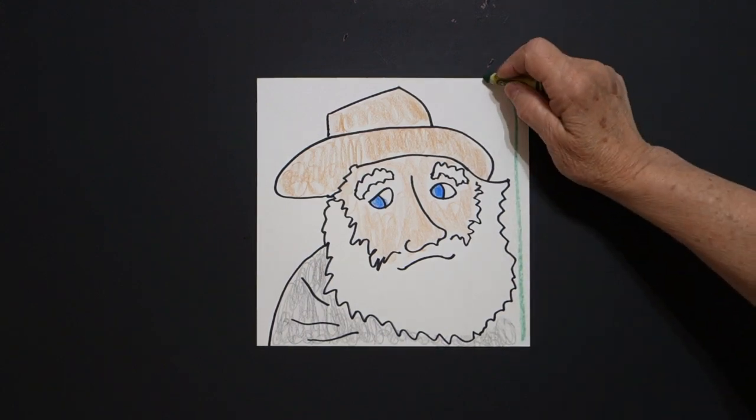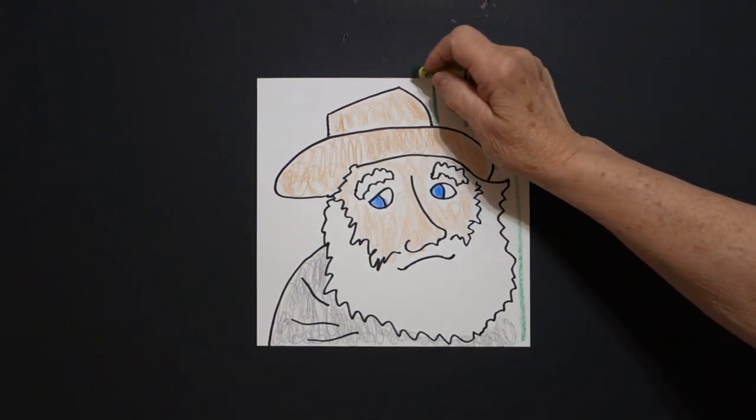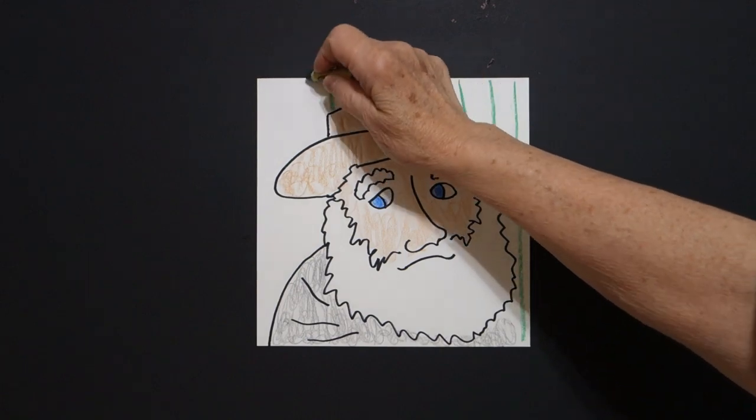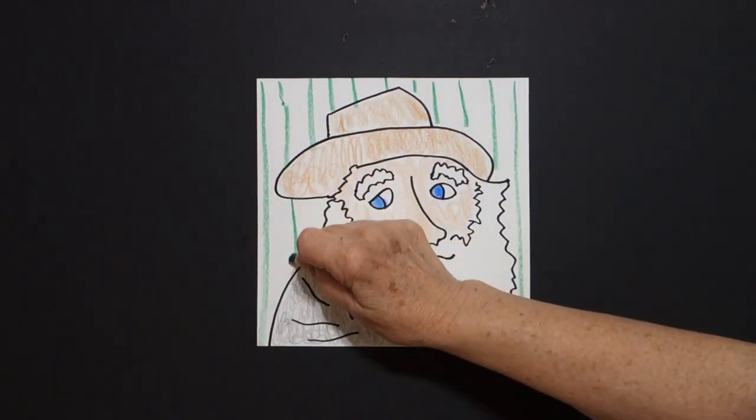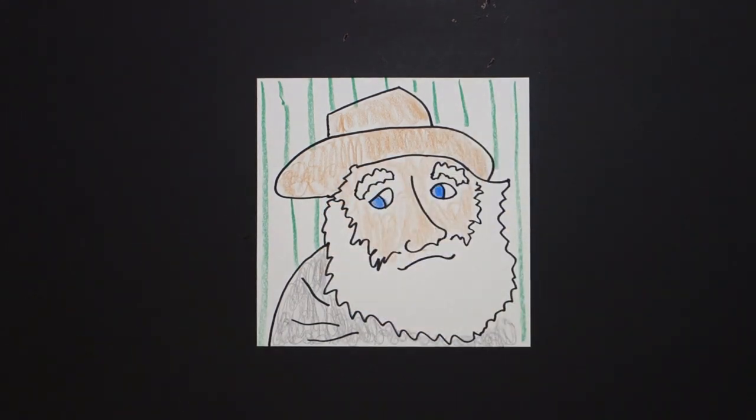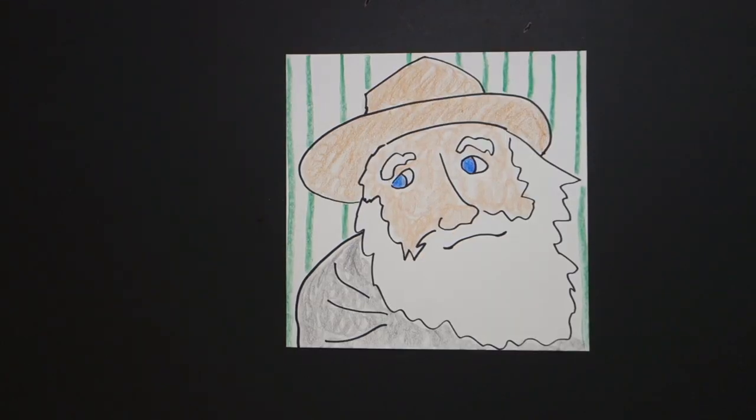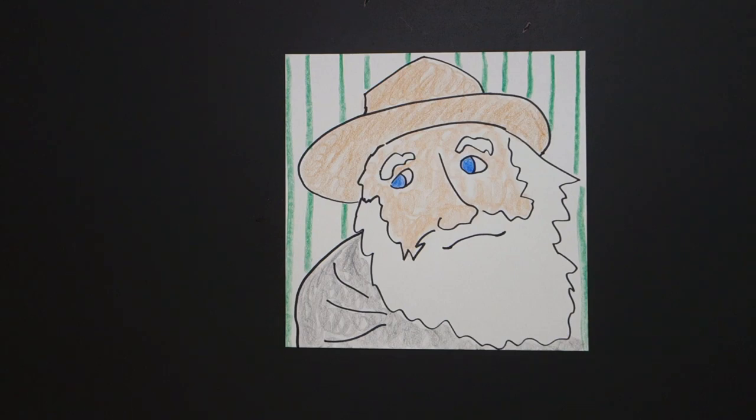All right, let's see what this looks like all colored in. Okay, here's Walt Whitman all colored in. He wrote Leaves of Grass, which was a major, major accomplishment in free verse poetry.